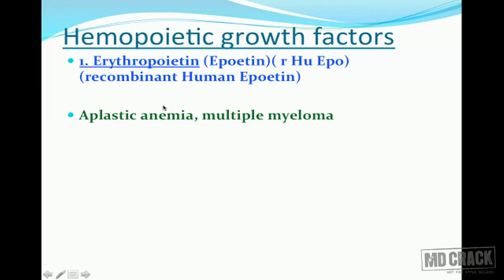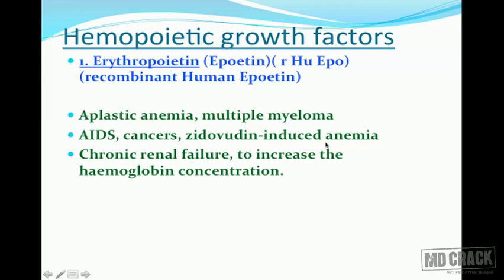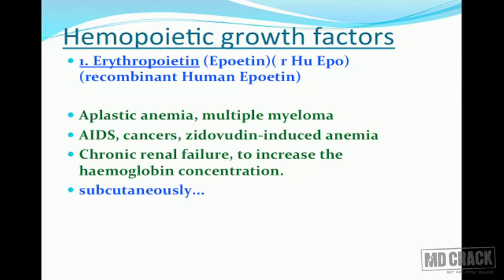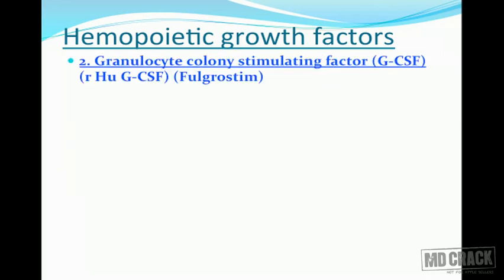Erythropoietin is indicated in severe cases of aplastic anemia (to stimulate bone marrow production), multiple myeloma, HIV disease, cancers, zidovudine-induced bone marrow suppression and anemia, and chronic renal failure to increase hemoglobin concentration. It is administered by subcutaneous route.